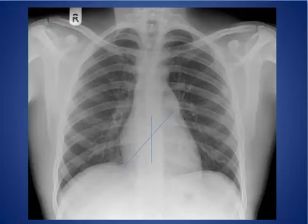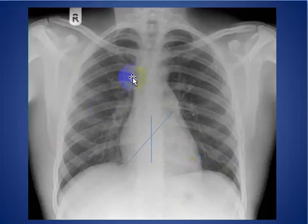This is the frontal chest X-ray of the patient. With a normal chest X-ray, you see the lungs are clear and the cardiac silhouette is within normal limits.